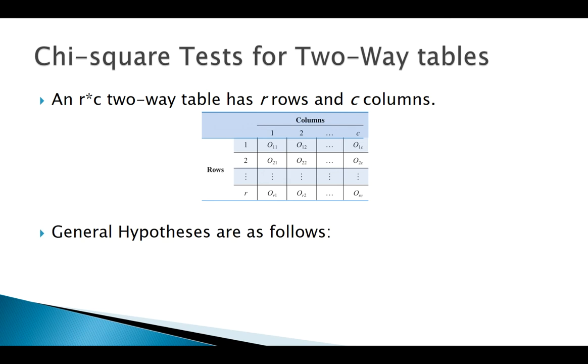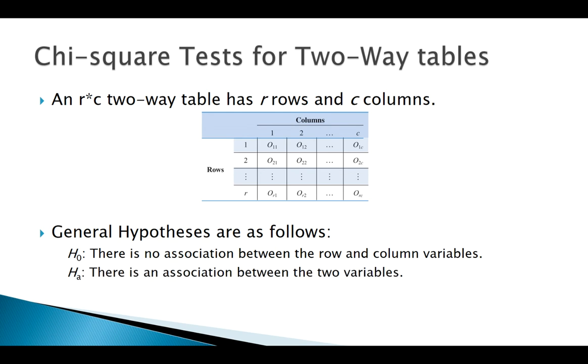In general, we'll have a row variable and a column variable. Our null hypothesis assumes there is no association between these two variables. That's our starting assumption – no association. On the other hand, our alternative hypothesis will be that there is an association between the variables.